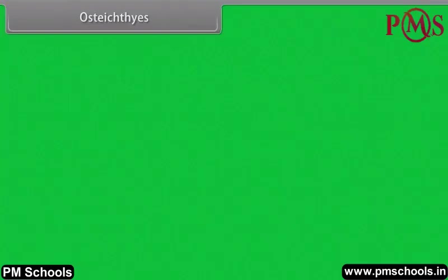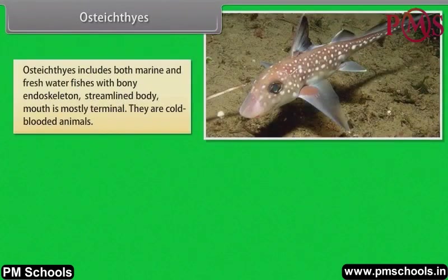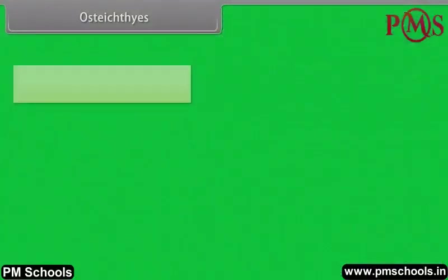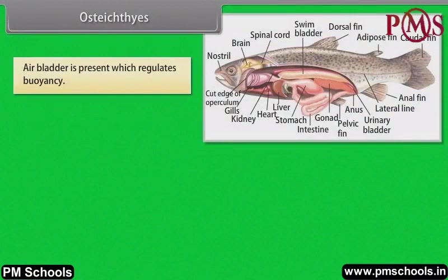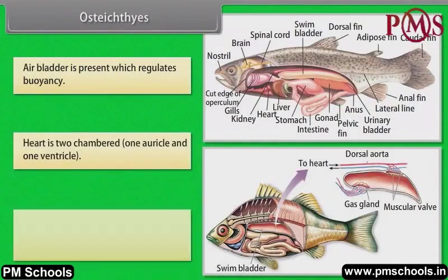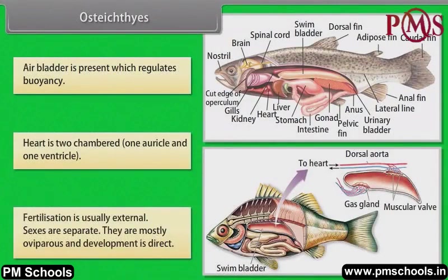Osteichthyes. Osteichthyes includes both marine and freshwater fishes with bony endoskeleton and streamlined body. Mouth is mostly terminal. They are cold-blooded animals. They have four pairs of gills, which are covered by an operculum on each side. Skin is covered with cycloid or ctenoid scales. Air bladder is present, which regulates buoyancy. Heart is two-chambered: one auricle and one ventricle. Fertilization is usually external. Sexes are separate. They are mostly oviparous and development is direct.